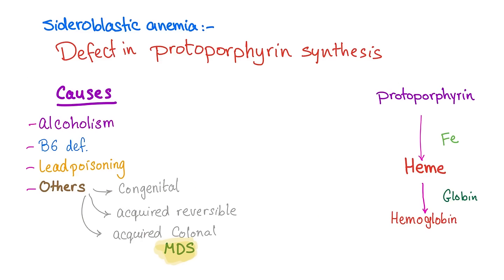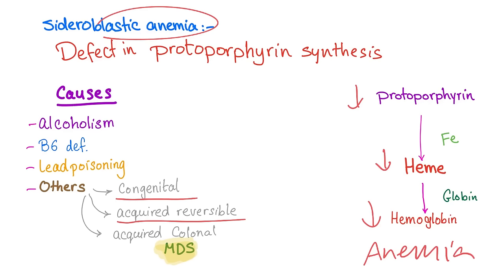If you recall from my previous video on sideroblastic anemia, sideroblastic anemia was a defect in protoporphyrin synthesis. If there is no protoporphyrin, there is no heme. When there is no heme, there is no hemoglobin — and this is anemia. Causes of sideroblastic anemia included congenital, acquired reversible, or acquired clonal, such as MDS, which is today's topic.